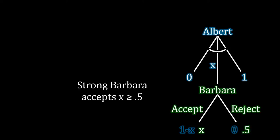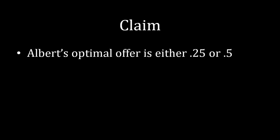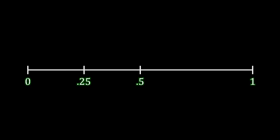Those parts of the game tree are easy to figure out. The hard part is figuring out what Albert should do, given that he doesn't know whether he's on the left or right side of the game tree. This is fairly complicated because there are infinitely many possible offers Albert could give — a choice between zero and one with infinitely many numbers on that interval. So Albert actually has to consider infinitely many different choices. And yet despite that, I'm going to make — and prove — a claim: Albert's optimal offer is either 0.25 or 0.5. We started with infinite possibilities, and I'm claiming there are only two optimal offers we really need to consider.